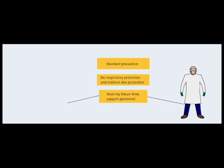Level D consists of a standard precautions ensemble using surgical gown, mask, and exam gloves. Level D PPE provides virtually no chemical respiratory protection and only minimal skin protection. Decon area support personnel typically wear this level of protection.